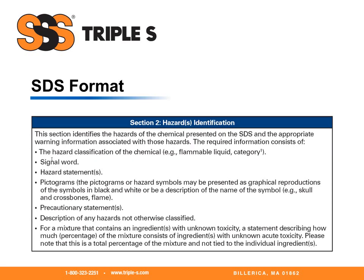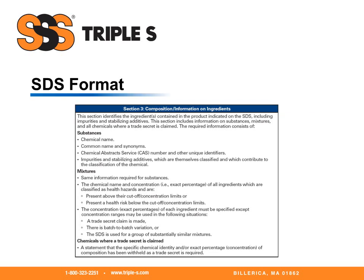Section two, hazard identification. This section identifies the hazards of the chemical presented on the safety data sheet and the appropriate warning information. This information will include class or category such as flammable liquid or corrosive liquid, a signal word — either danger or warning — a hazard statement such as 'may be harmful if swallowed,' pictograms, and precautionary statements such as 'do not get in eyes, on skin, or on clothing.'